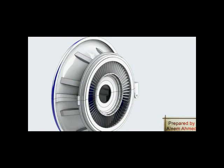Variable inlet guide vanes are located at the aft end of the inlet casing. The function of these guide vanes is to control the amount of airflow across the compressor.